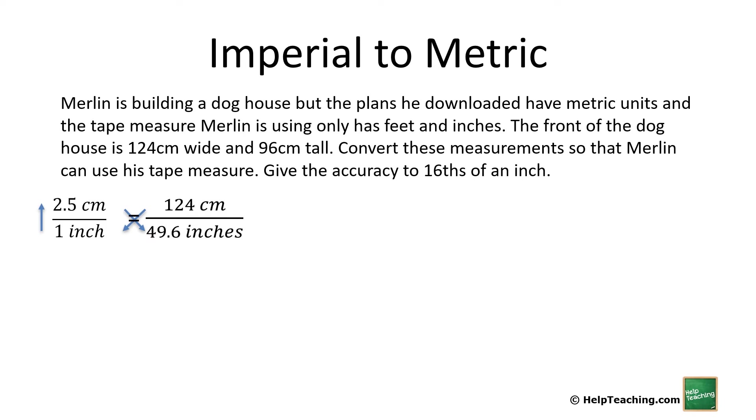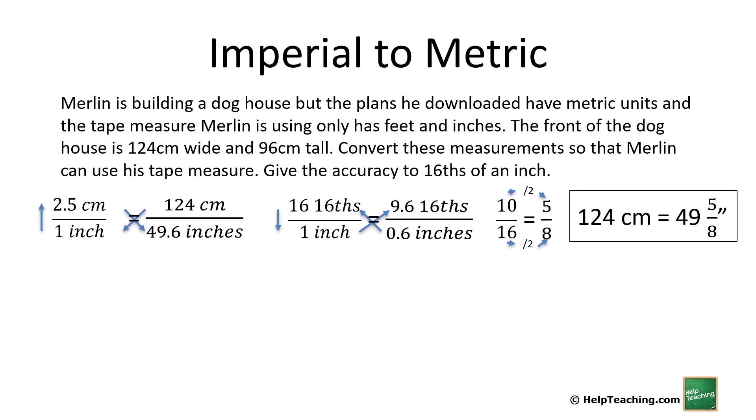Now we need to convert the 0.6 inches into sixteenths because 0.6 won't be on his tape measure. We know there are 16 sixteenths in one inch. So if we create our proportional relationship here, we're going to look for the sixteenths. We know it's 0.6 inches, so 0.6 times 16 divided by 1 gives us 9.6. We can round to 10 sixteenths. So we can see both 10 and 16 are divisible by 2, so we simplify to get 5/8. And our total measurement is 124 centimeters equals 49 and 5/8 of an inch.